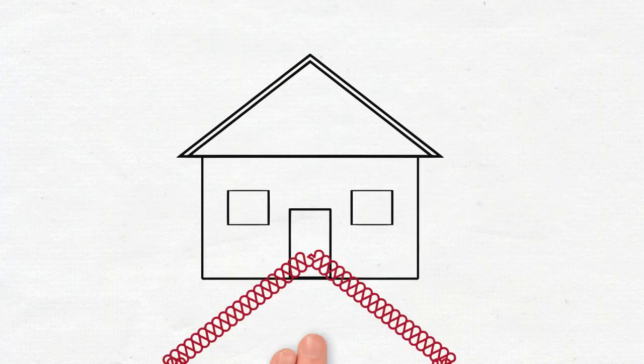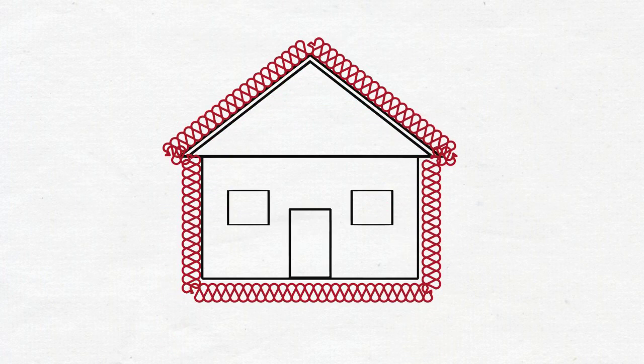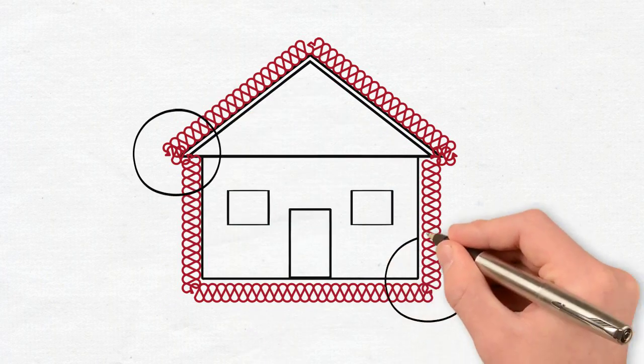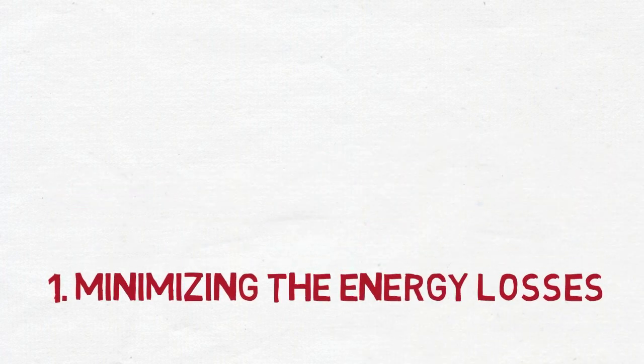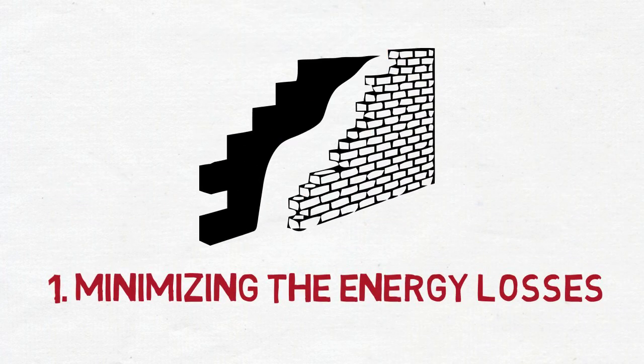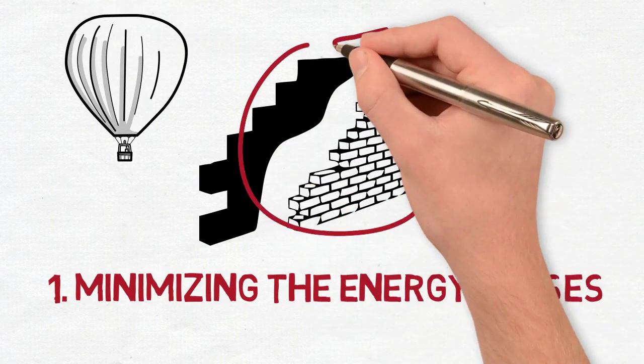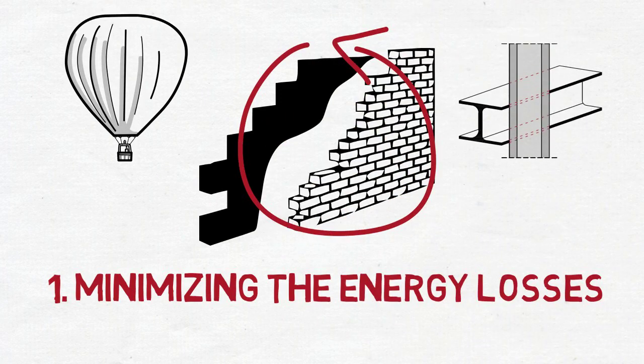We established that passive house starts with the envelope, so let's get into implementing envelope details. The first thing for optimizing passive house is minimizing the losses of the envelope. We increase the insulation level and get airtight, continuously insulated, and thermal bridge-free construction.